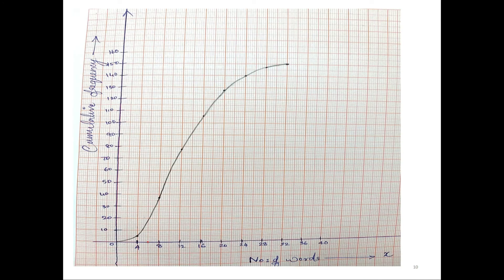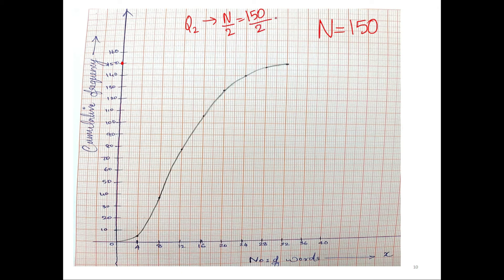Back to the curve we have already drawn. The value for N is 150 in this question. To find the median, median is Q2 — we are going to divide N by 2, which is 150 over 2, giving you 75.